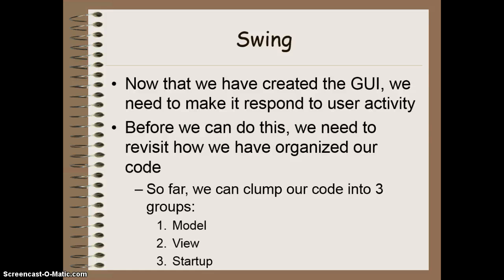So when a user clicks a button or types something into a text box or whatever. But before we can do this, we need to look at how we've organized our code. So far, we've clumped our code into three basic groups: we have our model, our view, and our startup.